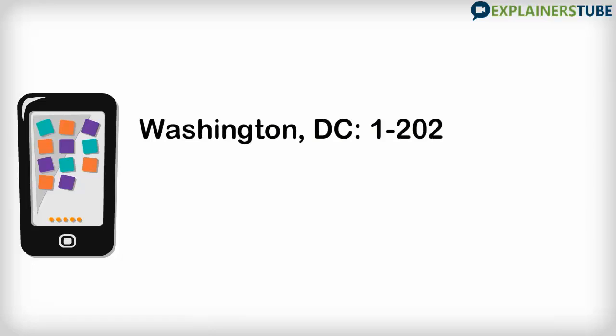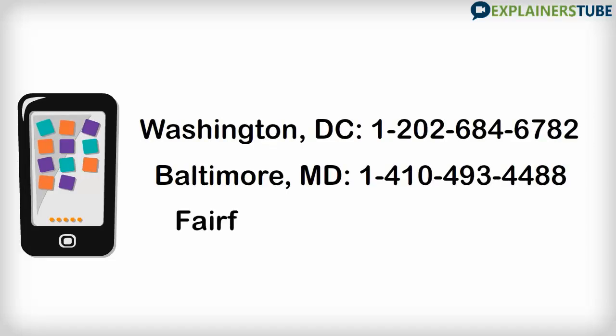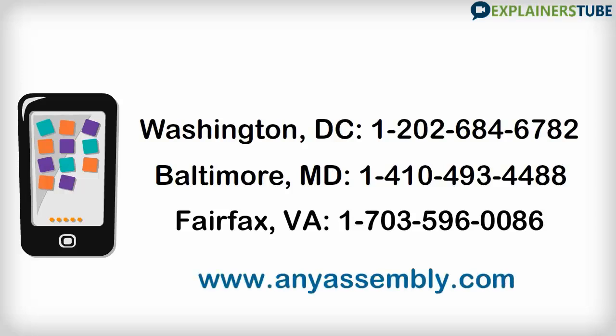For Washington DC, 1-202-684-6782. For Baltimore MD, 1-410-493-4488. For Fairfax VA, 1-703-596-0086. Or simply visit www.anyassembly.com.